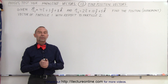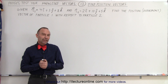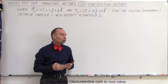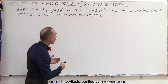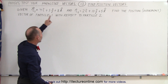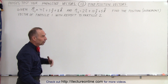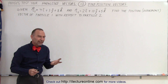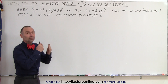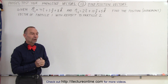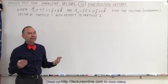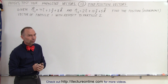Welcome to our lecture online. In this example, we're given two what we call position vectors, R1 and R2. Those position vectors, sometimes also called displacement vectors, are used to indicate the position of a particle relative to the origin.